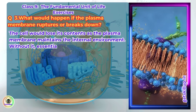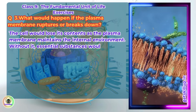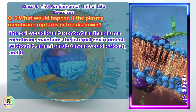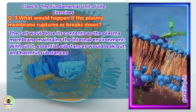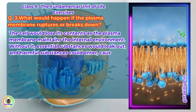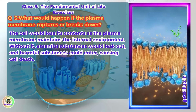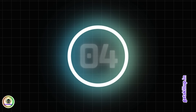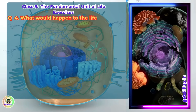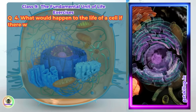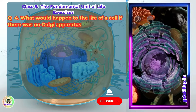Without it, essential substances would leak out and harmful substances could enter, causing cell death. Q4. What would happen to the life of a cell if there was no Golgi apparatus?